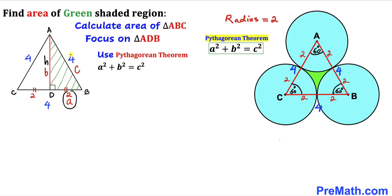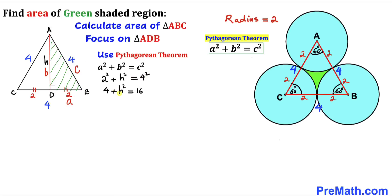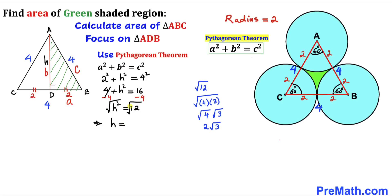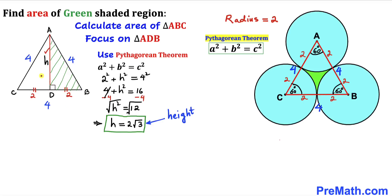In our case, A is 2, C is 4, and B is our H. So this becomes 2 squared plus H squared equals 4 squared, which simplifies to 4 plus H squared equals 16. Subtracting 4 from both sides gives H squared equals 12. Taking the square root, H equals the square root of 12, which simplifies to 2 times the square root of 3.